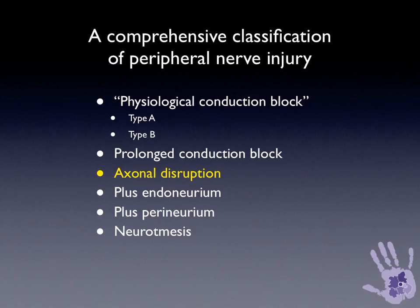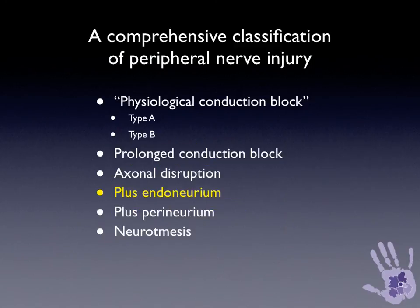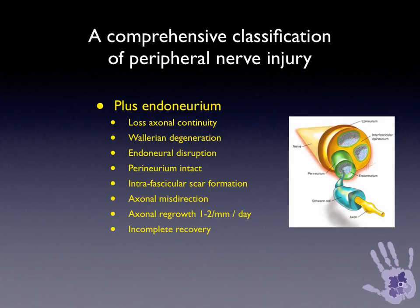Using the comprehensive classification system, axonal injury in isolation — as described in Sunderland grade II — is a rapidly recovering injury with correct target reinnervation and no cross-wiring. All axons will regenerate and track down the original endoneural tubes at rates of up to 4 mm per day, which can be examined with an advancing Tinel's sign. Full recovery is expected within weeks to months depending on the distance of regeneration. When the endoneural tubes are also damaged in addition to the axons, there is more disruption with some intra-fascicular scar formation. Axons trying to regrow may be misdirected, with sensory and motor mixing. Axonal regrowth tends to be slower through the scarred bed at one to two millimetres per day, and recovery is often incomplete, with duration again dependent on the distance from the end organs.